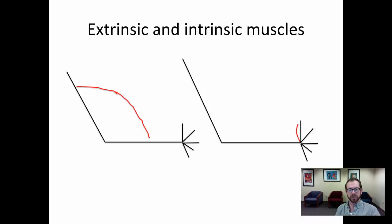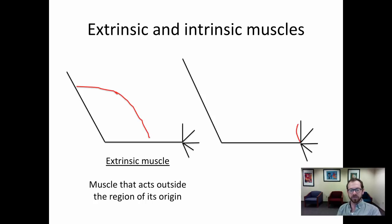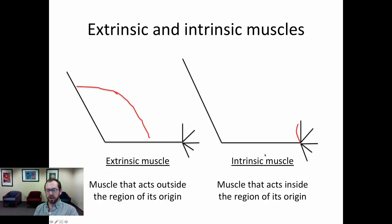Another way to classify muscles is by whether they are intrinsic or extrinsic. An extrinsic muscle acts outside the region of its origin — for example, a muscle that originates on the arm but acts on the forearm. Conversely, an intrinsic muscle acts inside the region of its origin — for example, a muscle that originates on the hand and also inserts in the hand region, so the action occurs in the same region where the muscle originates.